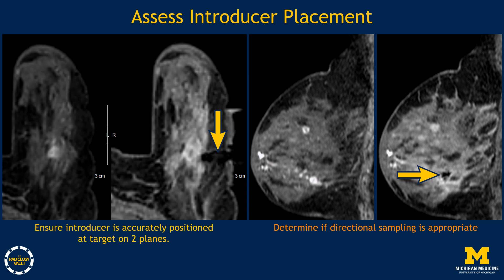Review the introducer position on two planes. On the sagittal plane, determine if directional sampling may be beneficial. In this case, the introducer may be slightly cranial to the expected location of the target, which is now difficult to see. We will plan to take extra samples towards the foot of the patient to ensure accurate sampling.